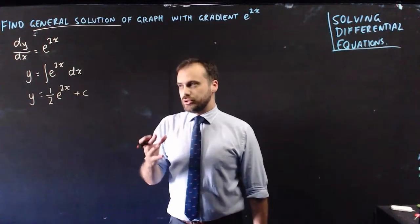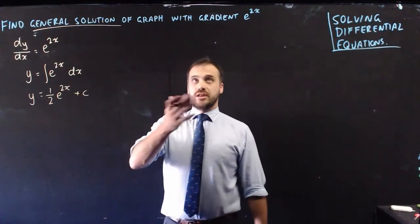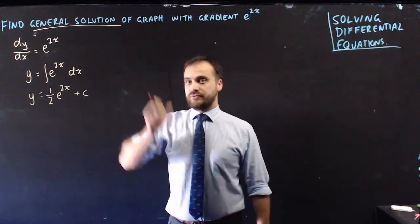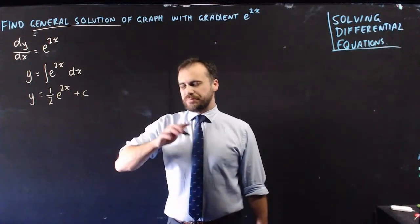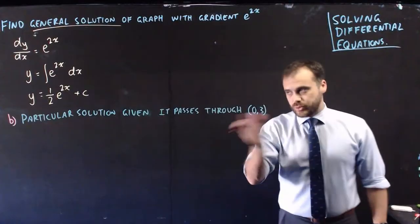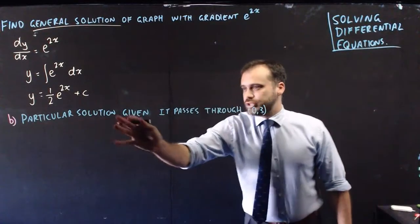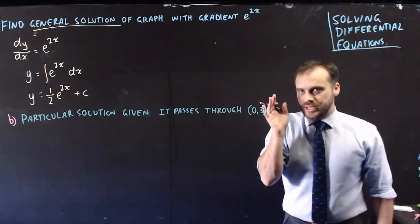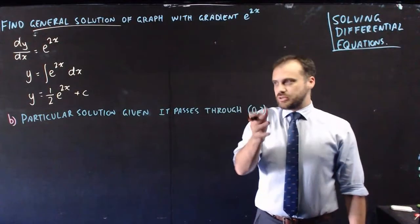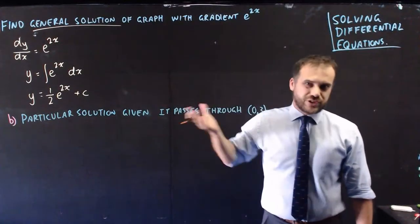It's our general solution, a family of graphs that fit in with this information. What if we wanted a particular solution? So this is the sort of question: a particular solution given it passes through point (0, 3). We just sub 0, 3 into our solution and solve for c.